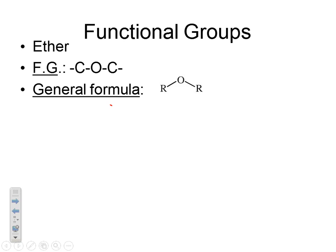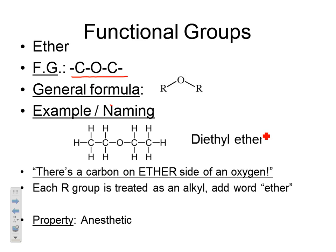The next functional group is the ether. The functional group for an ether is C–O–C (carbon single bond oxygen single bond carbon). This is similar to the alcohol, but instead of OH, the oxygen is incorporated into the carbon chain itself — the O is part of the chain. The general formula is ROR.